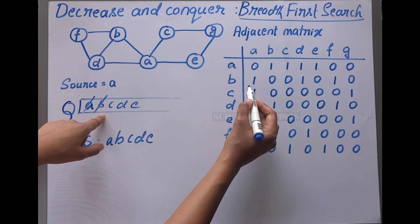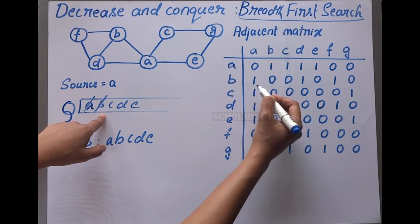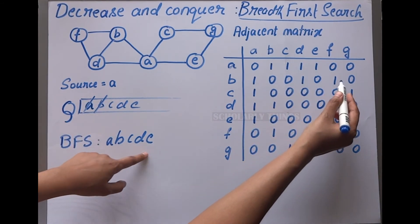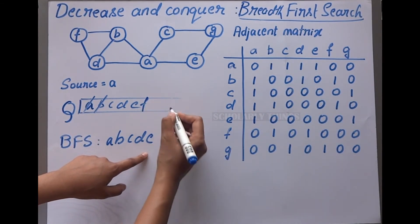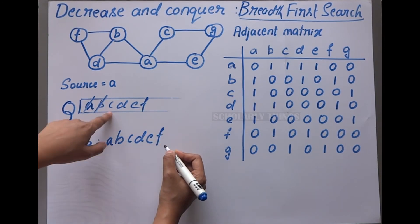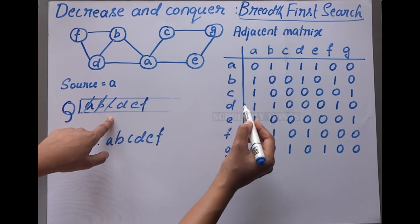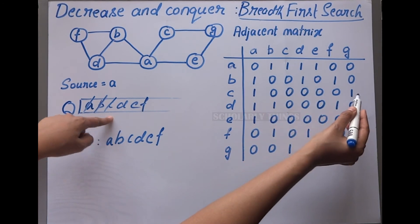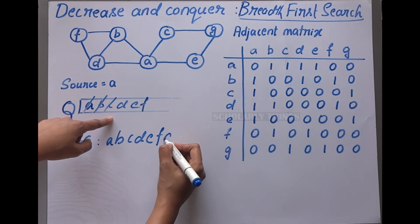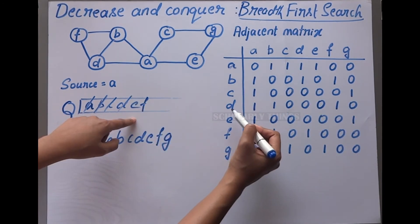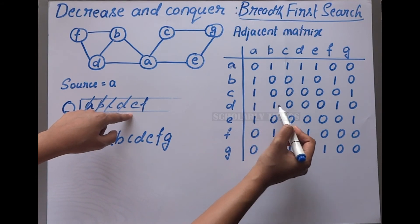Node b has a (visited), f is not visited, so write f in the queue and the BFS list. Next, pop c. Node a is done, g is not done, so write g. Pop d - a, b, f are done.